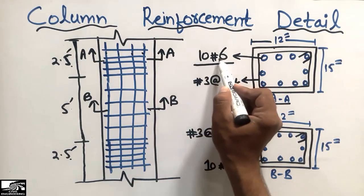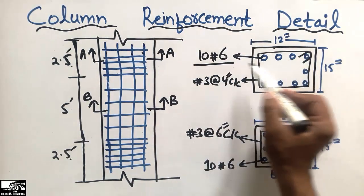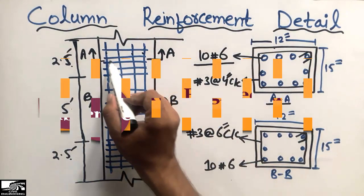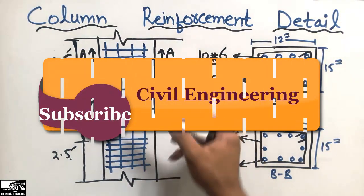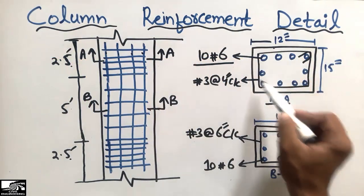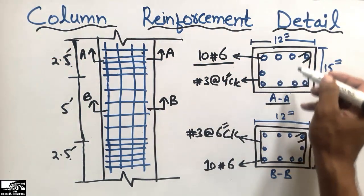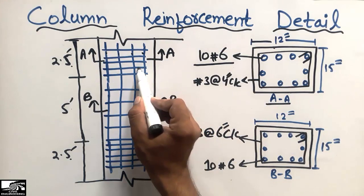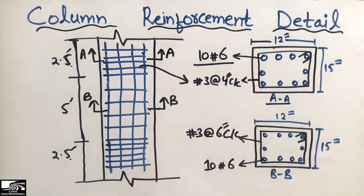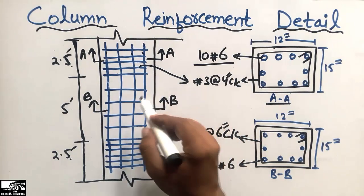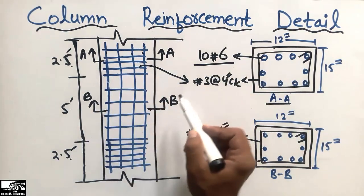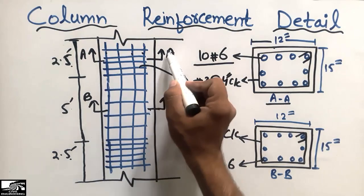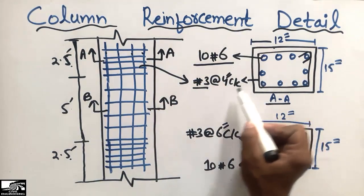Ten number six bars are provided as the main longitudinal bars in the column. In the elevation view you can see only four bars because it is a different view, while the cross-section gives full detail. These are the stirrups — called ties in columns — which hold the main bars in position. Number three bar ties are provided at four-inch center to center in section A.